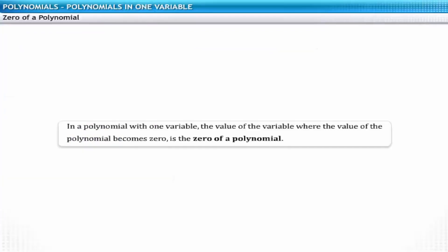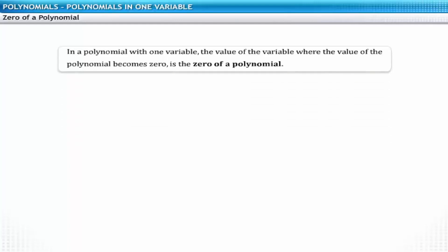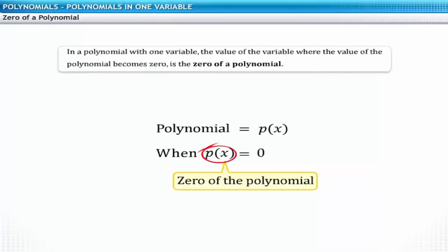In a polynomial with one variable, the value of the variable where the value of the polynomial becomes 0 is the zero of a polynomial. In other words, the value of x for which the value of the polynomial p of x equals 0 is the zero of the polynomial.